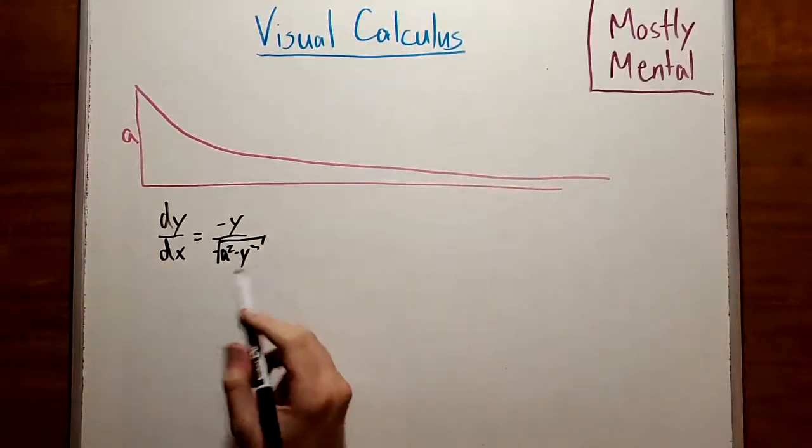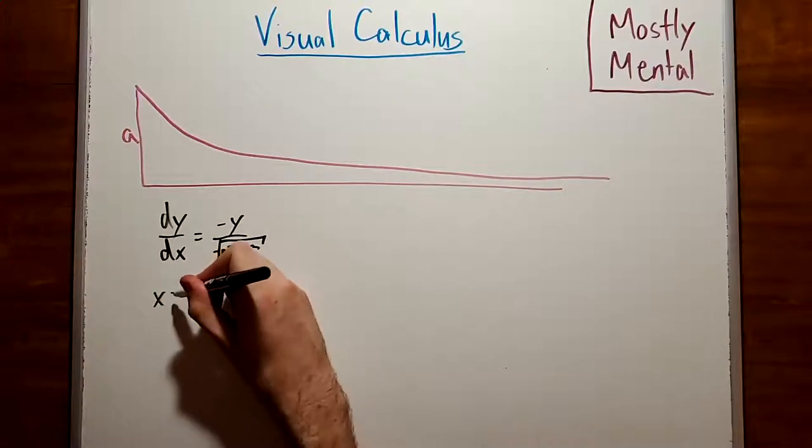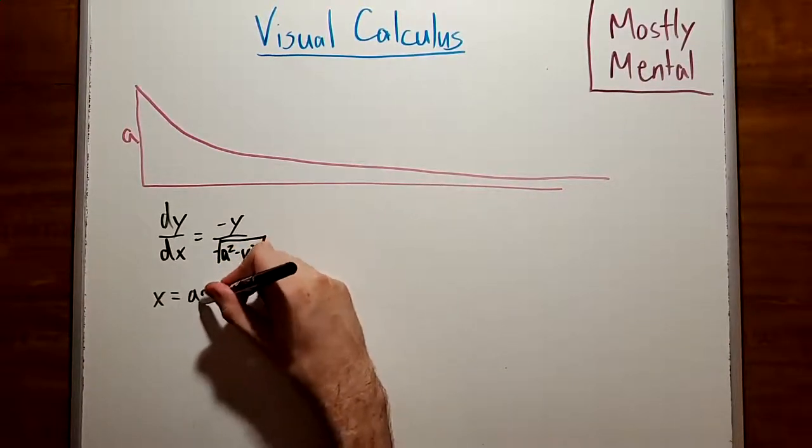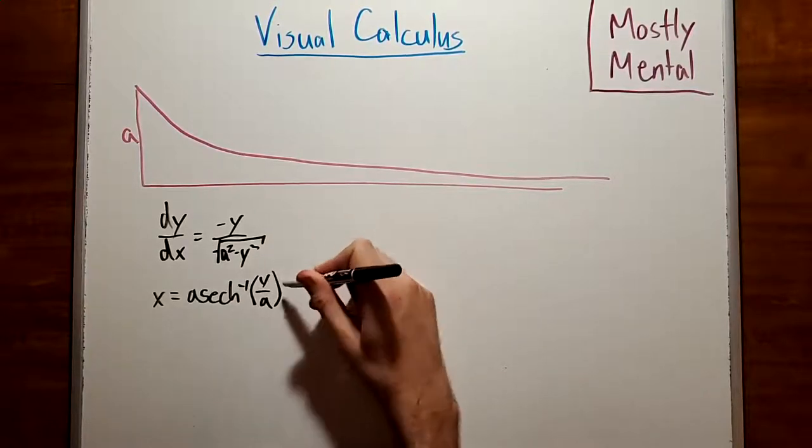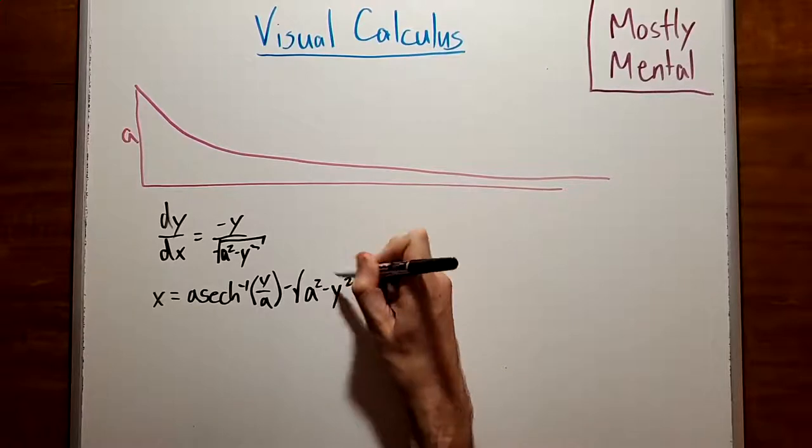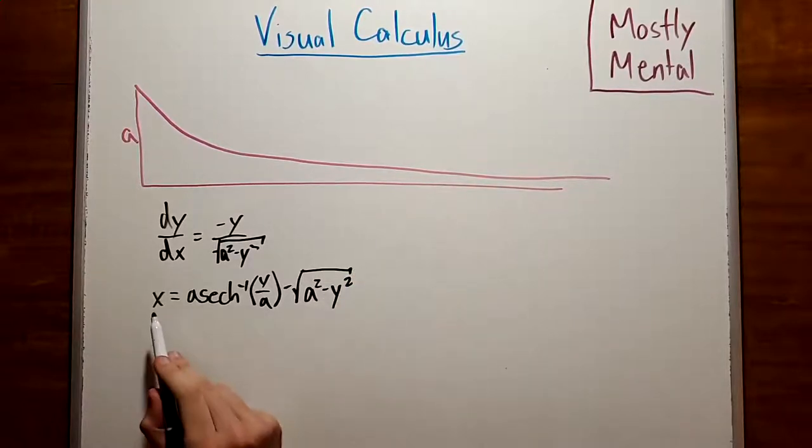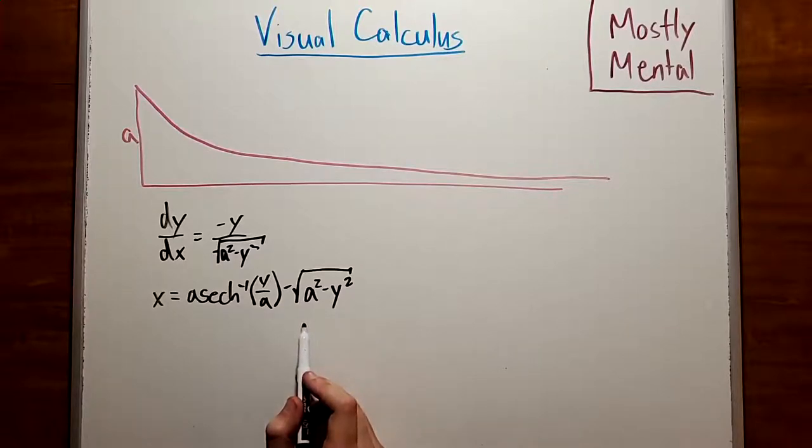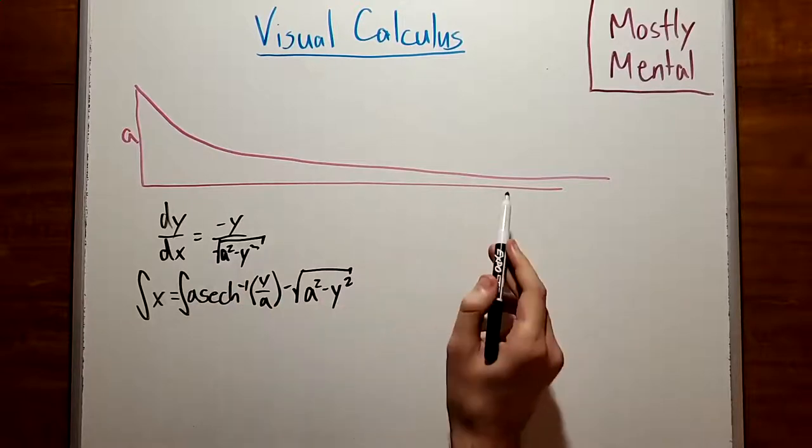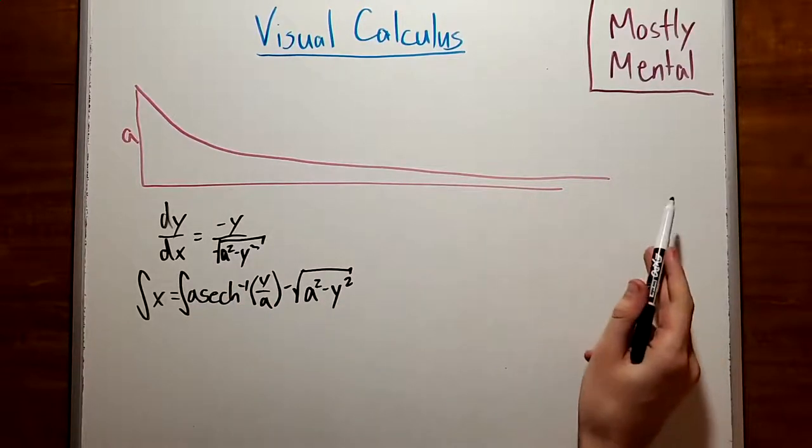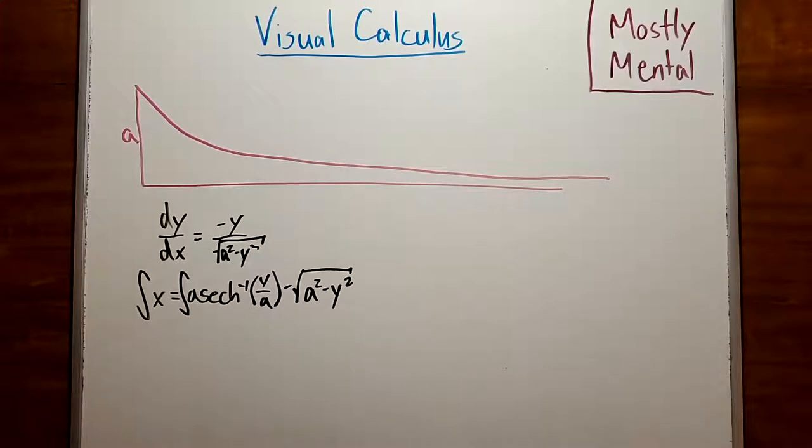And then we'd need to solve this to get something horrible. In this case, x is a times the inverse hyperbolic secant of y over a, minus the square root of a squared minus y squared. And notice that we're solving for x here, because it turns out there is no nice form for y. And then we'd need to integrate this whole monstrosity. And that's going to be an improper integral, because this goes off to infinity. And all around, it's a pretty bad time.